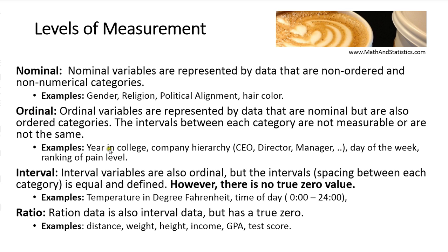Ordinal variables have order implicitly associated with them, such as year in college. Year in college is still qualitative and discrete; however, a senior is farther along than a sophomore, and that implicit order makes the variable ordinal. Similarly, company hierarchy, the day of the week, and ranking of pain level are all ordinal data. There is order implied, but there are no true equal intervals between the different values.